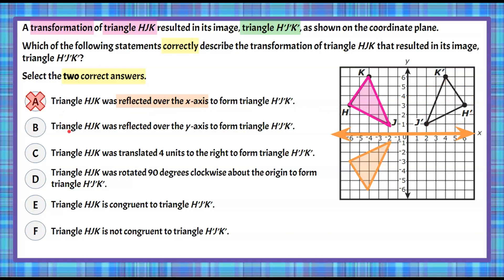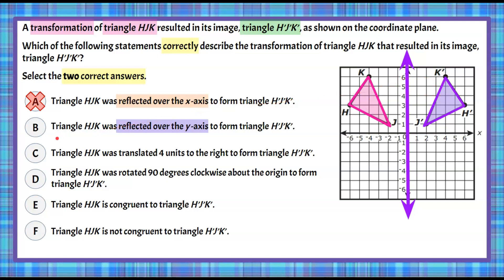Now let's look at answer choice B: triangle HJK reflected over the y-axis. Using the y-axis as our line of reflection, every vertex goes the same distance on the opposite side — like folding a piece of paper for a mirror image. J is two away, H is six away, K is four away — each reflected the same distance across. This confirms that triangle H'J'K' is the reflection of HJK over the y-axis, so B is our first correct answer.